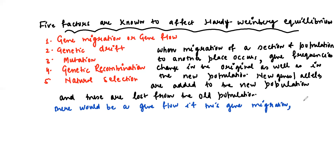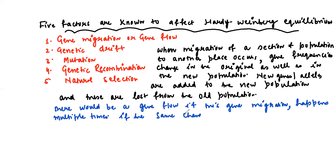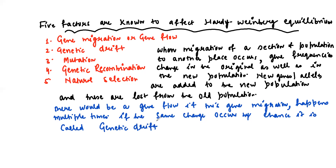If this gene migration happens multiple times and the same change occurs by chance, it is called genetic drift — also called the Sewall Wright effect. Genetic drift operates only on smaller population sizes.